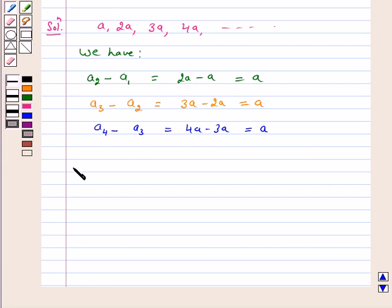That is, A_(K+1) minus A_K is the same every time. That is, it is constant.